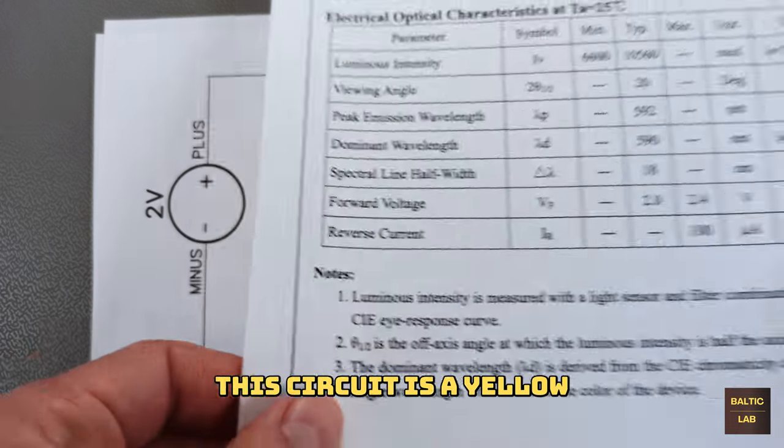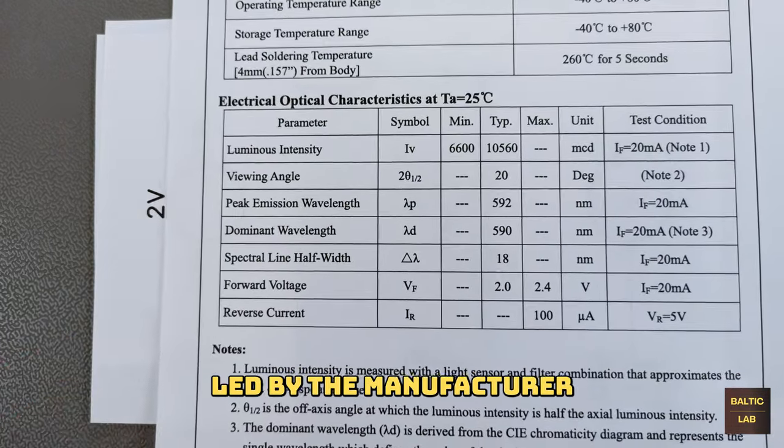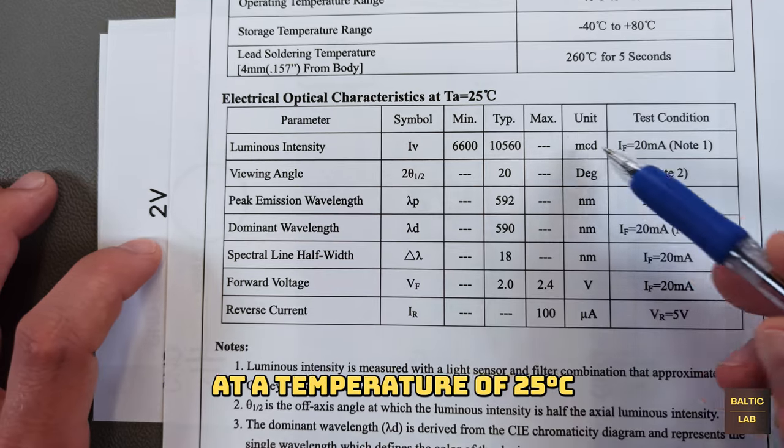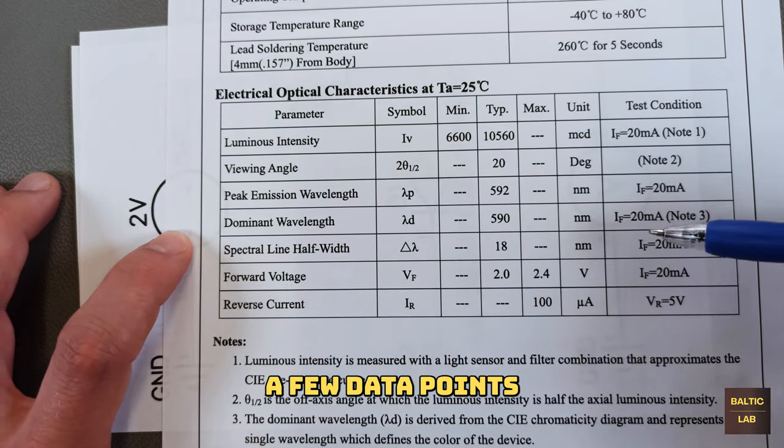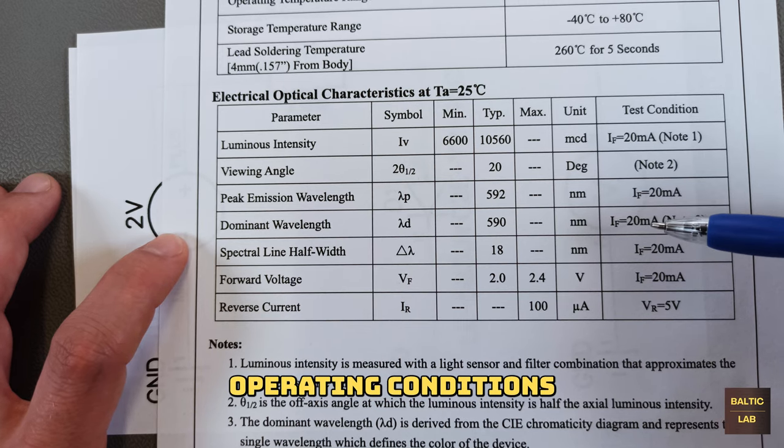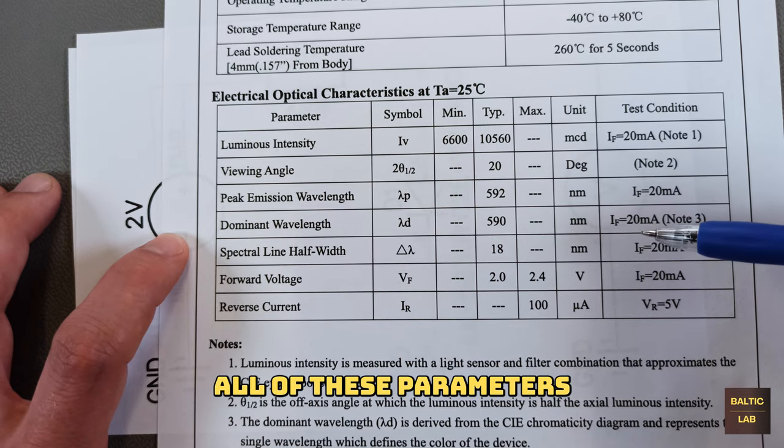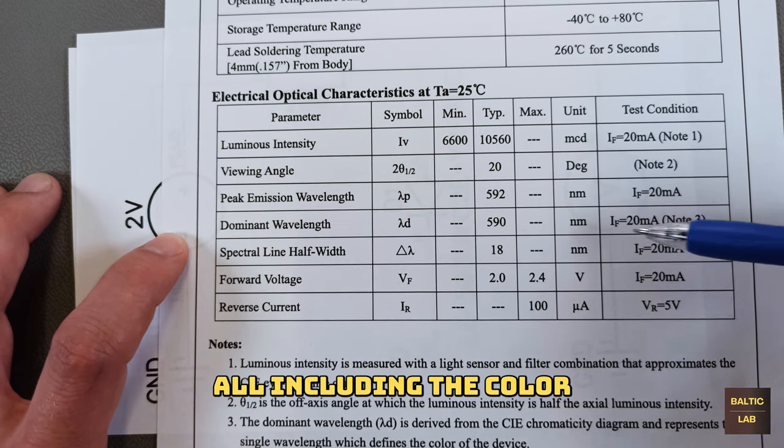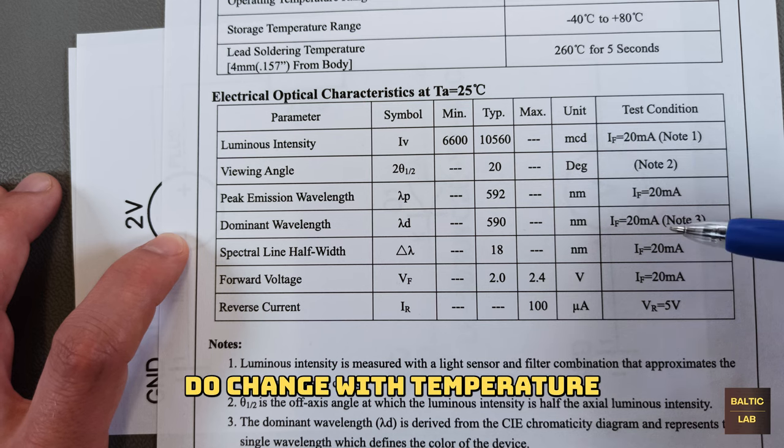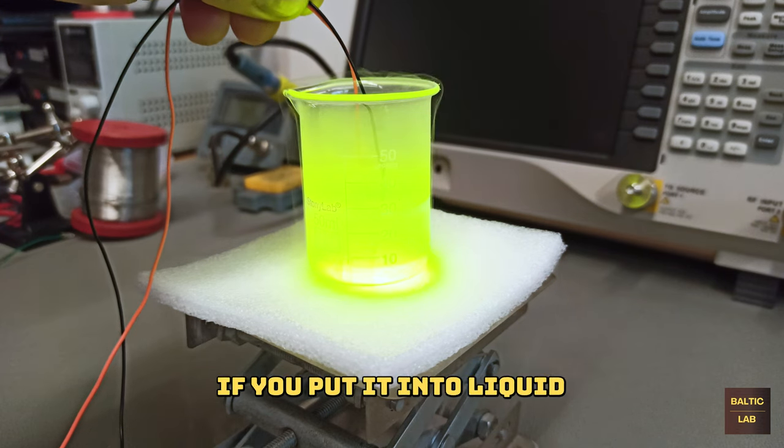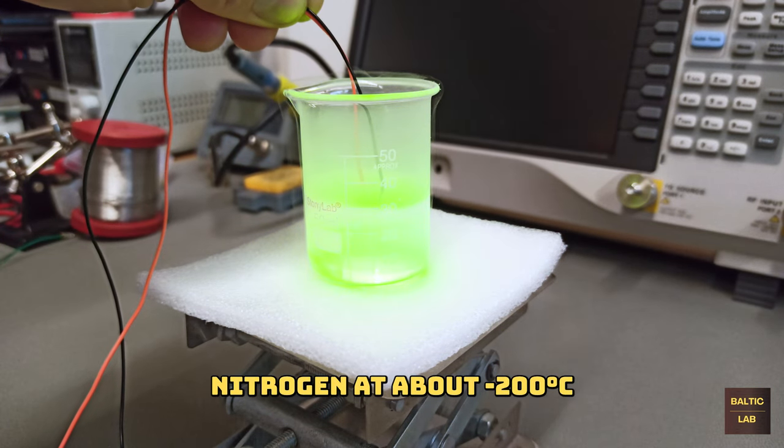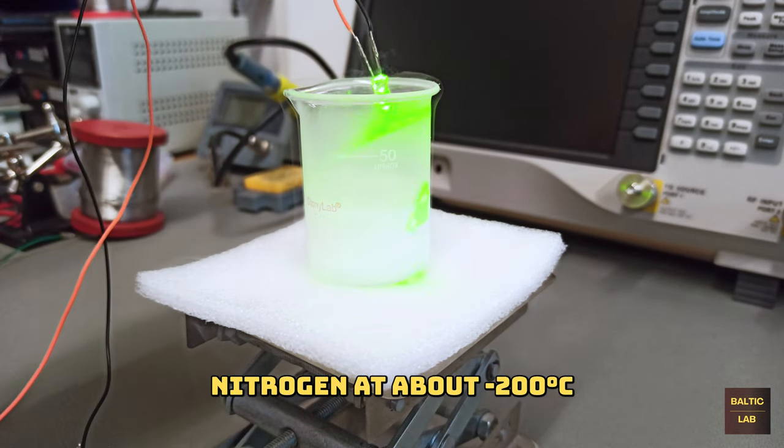The diode chosen in this circuit is a yellow LED by the manufacturer Lucky Light. At a temperature of 25 degrees Celsius the manufacturer specifies a few data points for standard operating conditions. All of these parameters and yes all including the color do change with temperature. That is why you can turn a yellow LED into a green one if you put it into liquid nitrogen at about minus 200 degrees Celsius.